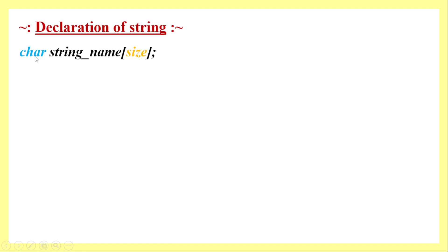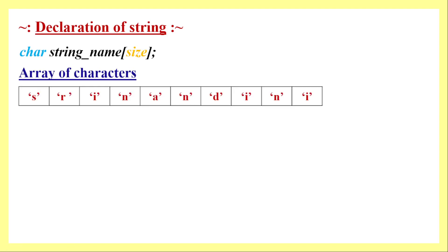This is the syntax of declaration of a character array or string. The type is always 'char' since it is a string, then comes the string name, and within brackets we declare the size of the array, terminated by a semicolon. This is an example of a string where the actual length is 10 characters, and as we know, for a string we assign one extra byte for the null character.